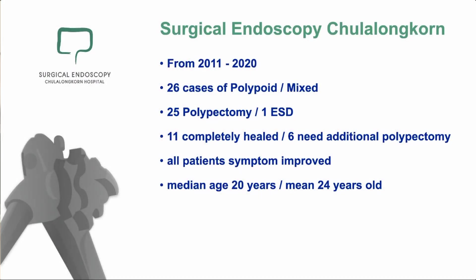From our experience since 2011, 26 polypoid or mixed-type cases were treated by polypectomy or ESD — 25 polypectomy and one ESD procedure. Eleven were completely healed, and six needed additional polypectomy as I showed. All patients' symptoms improved. One interesting finding is the age of patients with polypoid or mixed type: the median age was 20 years old and the mean age was 24 years old — interestingly, this type affects younger patients than the ulcerative type. We need to look at this in more detail.